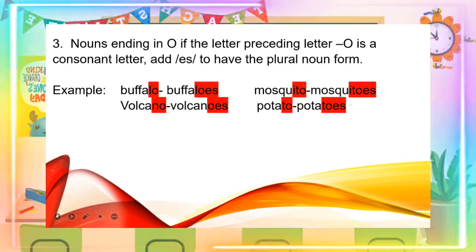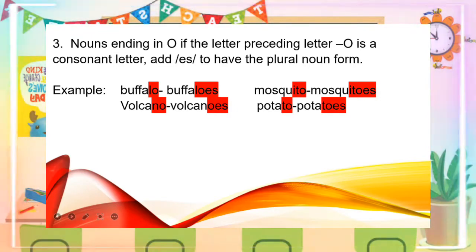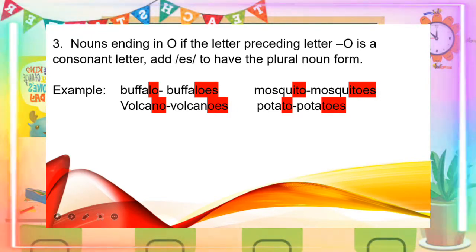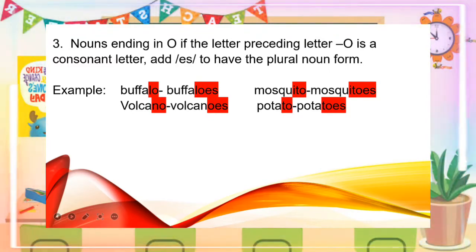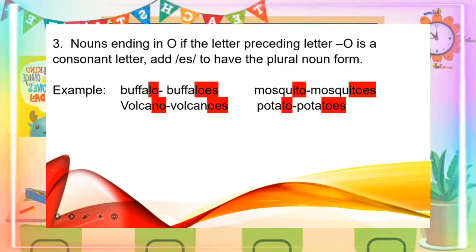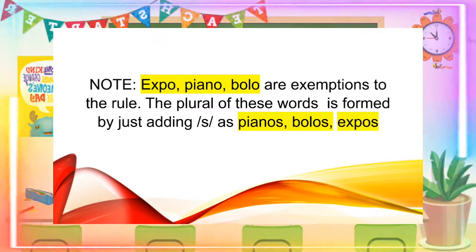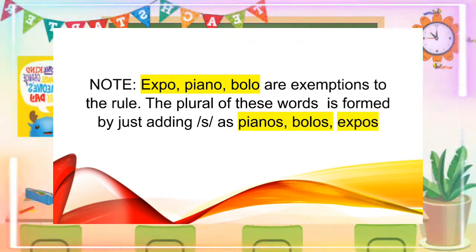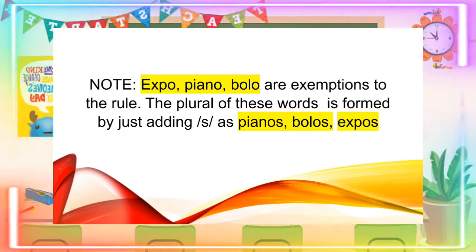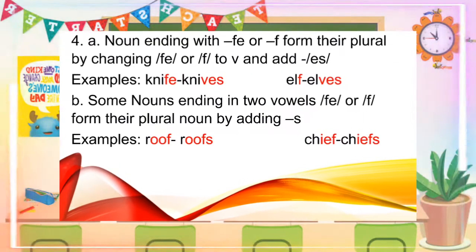Rule number three: nouns ending in O — if the letter preceding O is a consonant letter, add ES to have the plural form. For example: buffalo, buffaloes; volcano, volcanoes; mosquito, mosquitoes; potato, potatoes. We also have to remember that expo, piano, and bolo are exceptions to this rule. The plural of these words is formed by just adding S: pianos, bolos, and expos.